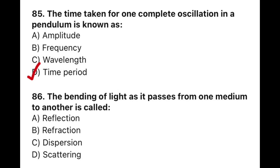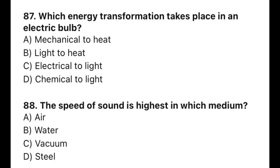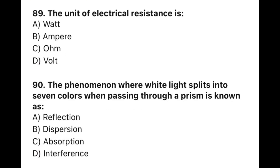Question 86: The bending of light as it passes from one medium to another is called — the correct option is B — refraction. Question 87: Which energy transformation takes place in an electric bulb? The correct option is C — electrical energy to light energy. Question 88: The speed of sound is highest in which medium? The correct option is D — steel (solid). Question 89: The unit of electric resistance is — the correct option is C — ohm. Question 90: The phenomenon where white light splits into seven colors when passing through a prism is known as — the correct option is B — dispersion.